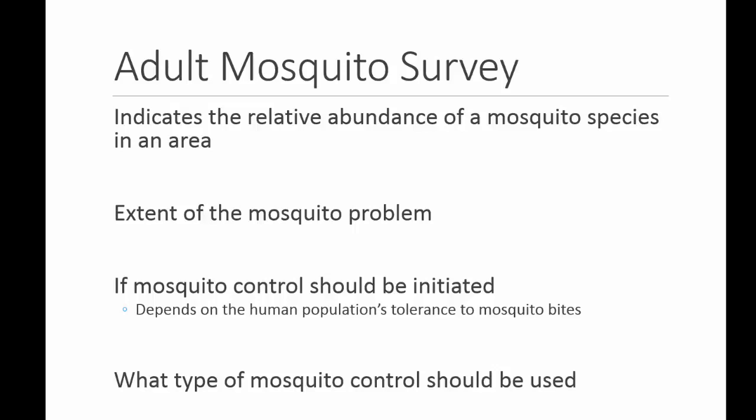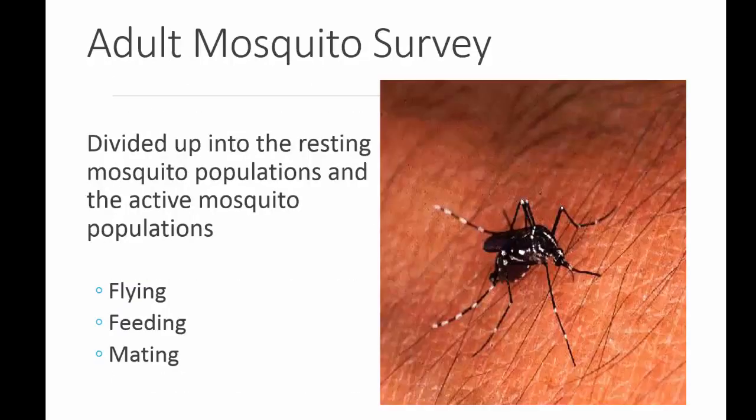Adult mosquitoes are fragile, and they readily lose body parts, wings, and other things when handled roughly, which makes identification difficult and sometimes impossible. Some special collection equipment is designed to capture adult mosquitoes with minimum damage. There are three types of ways that we survey for adult mosquitoes: surveying for flying mosquitoes, surveying for feeding mosquitoes, and surveying for mating mosquitoes.